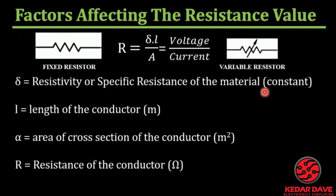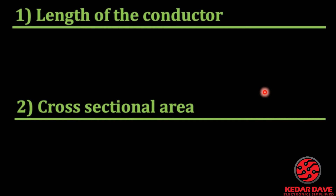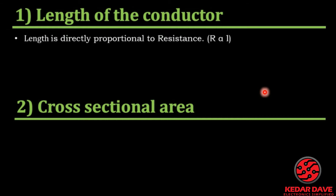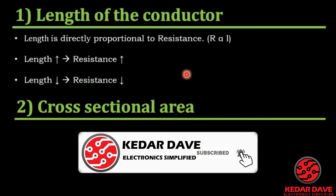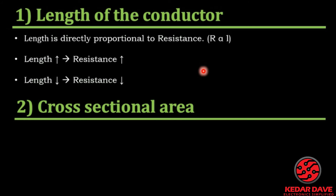Now let's understand how these factors affect the resistance value. First, the length of the conductor: length is directly proportional to resistance. If the length increases, resistance also increases; if length decreases, resistance also decreases. If they were inversely proportional, then as length increases, resistance would decrease — but here both change in the same proportion.